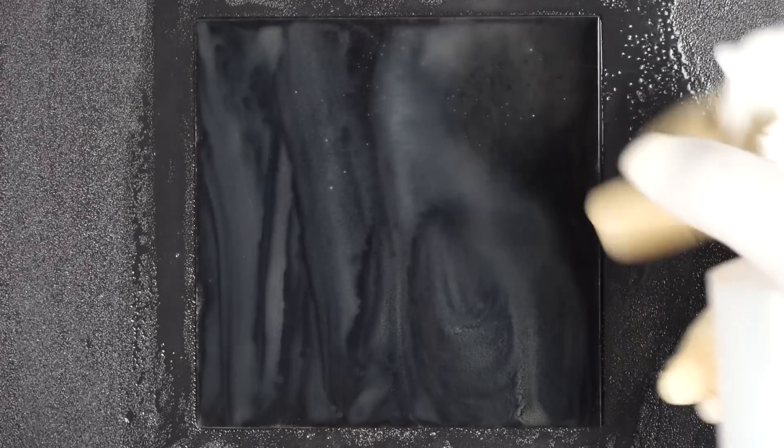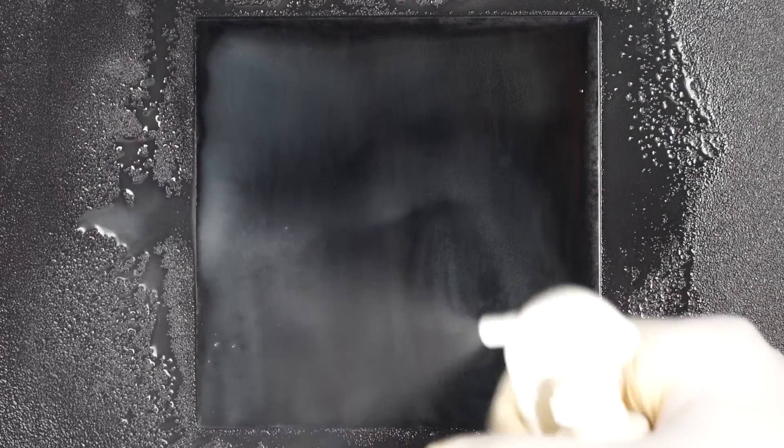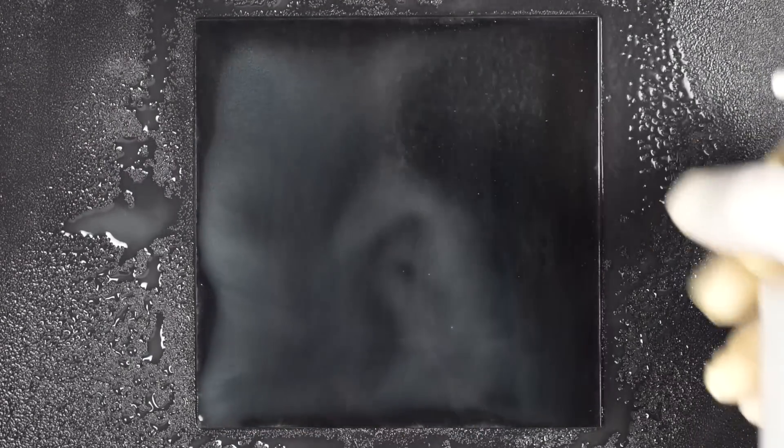Once the patina is applied everywhere, let the part sit for about 30 seconds to darken before rinsing with water. For rinsing large parts, you can use spray bottles with water or compressed air with your spray gun filled with water.